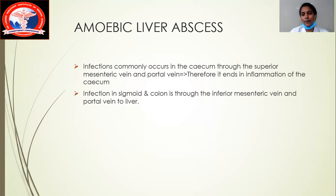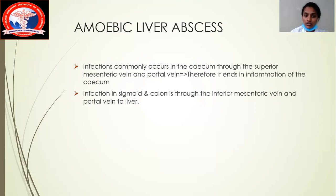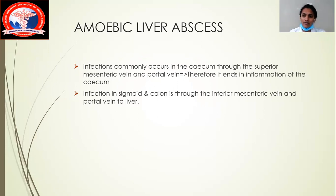The amoebic liver abscess infection is most commonly seen in the cecum. There must be a proper transmission channel. The infection occurs mainly in the cecum through the superior mesenteric vein and portal vein. The second most common site of infection is the sigmoid and colon, through the inferior mesenteric vein and portal vein, which travels to the liver.